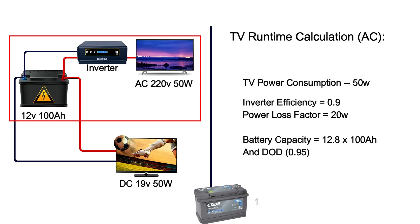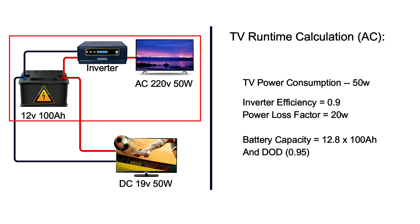If your battery is a lead-acid type, keep in mind that you can only get 50 percent depth of discharge, or a 0.5 discharge ratio — thus a 100 ampere-hour battery effectively becomes a 50 ampere-hour battery. Now that we have all the details we need, let's calculate the runtime.